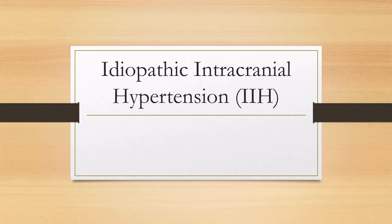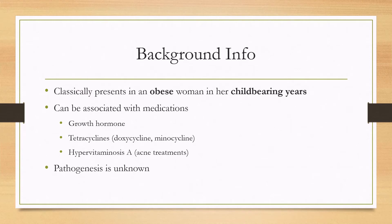Let's talk about idiopathic intracranial hypertension. This is a disease that classically presents in an obese woman in her childbearing years. It can present in men as well, less commonly. There are medications that are associated with the disease, though there is no known causal link — people taking growth hormones or tetracyclines such as doxycycline and minocycline, as well as hypervitaminosis A such as when someone is taking acne treatments, can all be associated with the disease.